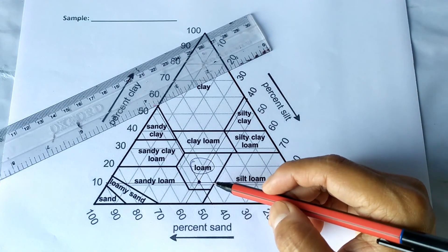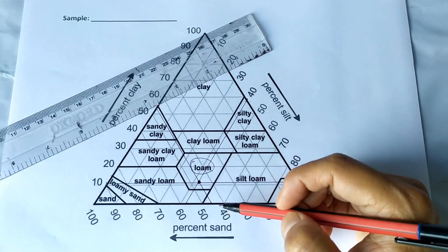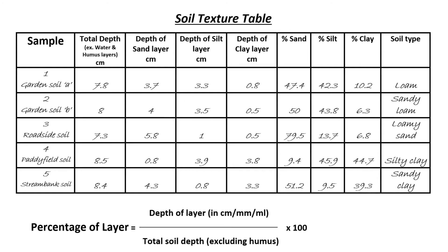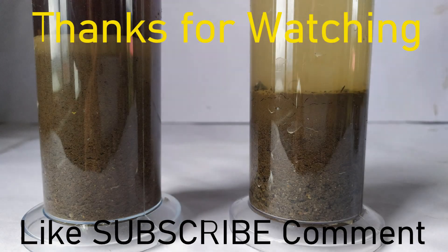Sample 1, which is garden soil, is found to have a loamy texture after plotting the percentage components on the soil textural triangle, so sample 1 can be called loamy soil. In this way, the soil texture of all five samples can be determined. This is how one can easily deduce the soil texture of different soil samples either in the lab, in the field, or even at home. Make sure to watch other soil experiment videos as well by clicking on the end screen card or the links given in the description below. Thanks for watching.